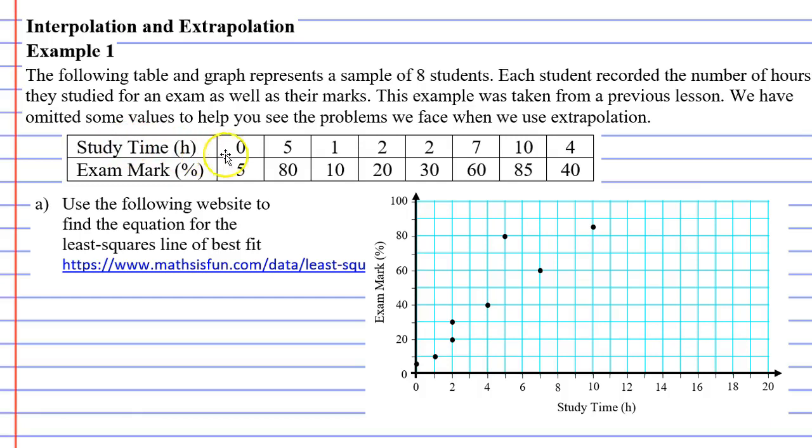Here on our table we can see that a student that did zero hours of study got a mark of five percent on their test and we have other students, for instance, this one did 10 hours of study and got a high mark of 85 percent.